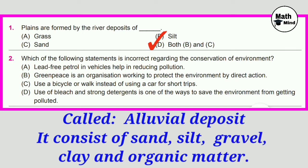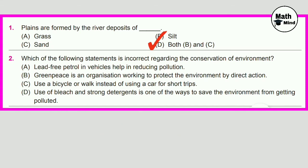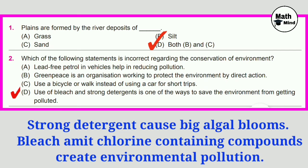Question No. 2: Which of the following statements is incorrect regarding the conservation of environment? Correct answer is D — use of bleach and strong detergents is one of the ways to save the environment from getting polluted.